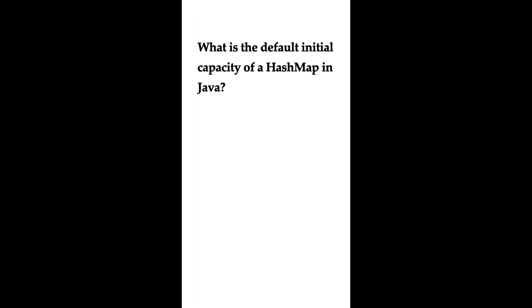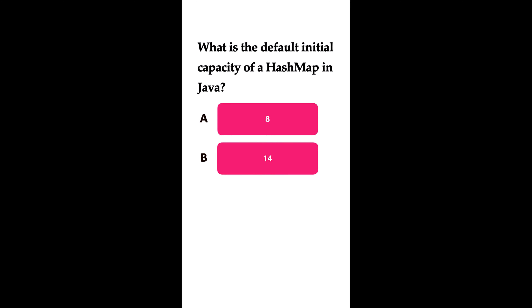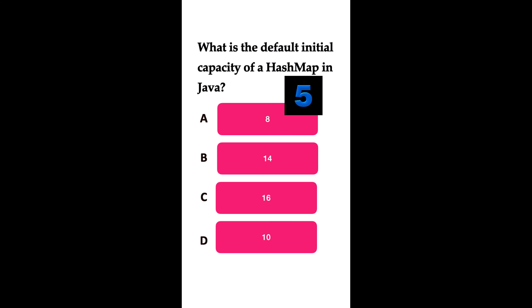What is the default initial capacity of a HashMap in Java? Option A: 8. Option B: 14. Option C: 16. Option D: 10. The correct answer is 16. In Java, the HashMap class has a default initial capacity of 16. When you create a HashMap without specifying the initial capacity, it is initialized with space for 16 key-value pairs before it needs to be resized.